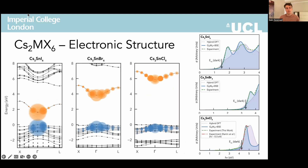Looking at the tin polymorphs, we find qualitatively different behaviour with a dominant contribution at gamma, corresponding to delocalised Wannier-Mott type excitons. The effect on the bandgaps is smaller than in the titanium compounds, but the absorption profile becomes more peaked due to this weak but significant exciton binding on oscillator strengths, again giving improved agreement with experimental results.